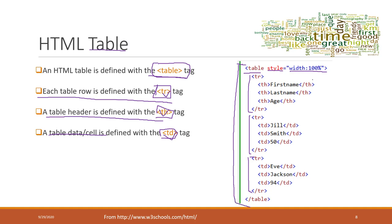For the first row, we have headings: first name, last name, and age — three headings as the header. For the second row, those are the values: first name is GL, last name is Smith, and age is 15. The third row has values for the first column, second column, and last column.